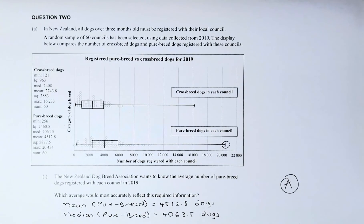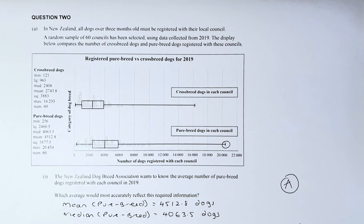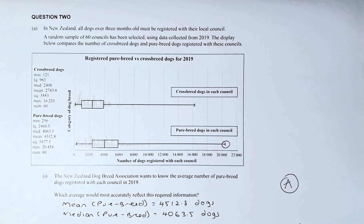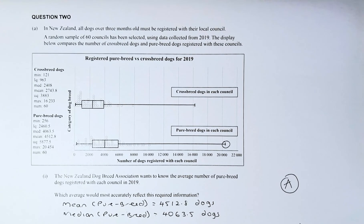Good day! In this video, we are going to look at question 2A of the 2021 NCA Chants and Data Examination. If you can do the whole of question 2A, you will get quite a good grade because there are two excellent questions. 2A part 1 is an achieve, 2A parts 2 and 3 are excellent, and 2A part 4 is a merit.